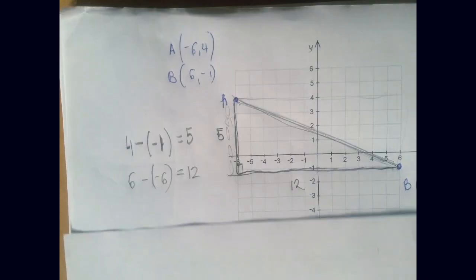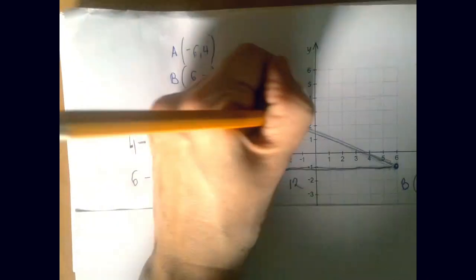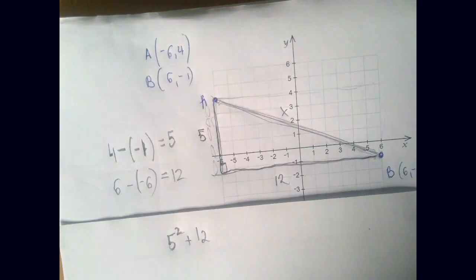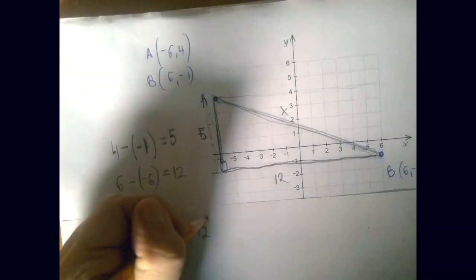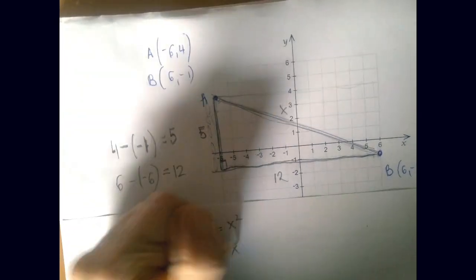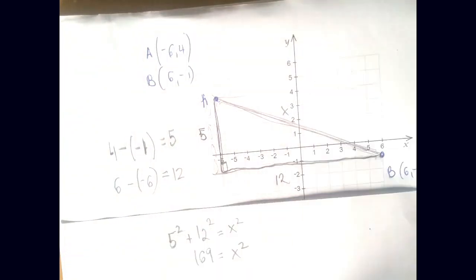For the hypotenuse, we can apply the Pythagorean theorem. If we call the hypotenuse x, then the Pythagorean theorem stated for this triangle is 5 squared plus 12 squared equals x squared. So 169 equals x squared. All right.